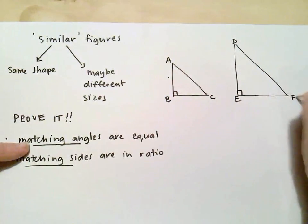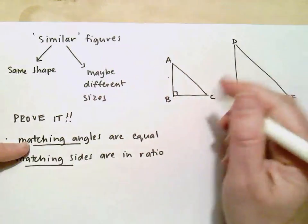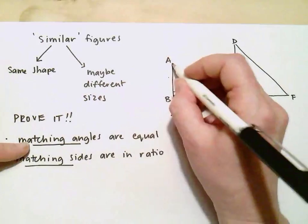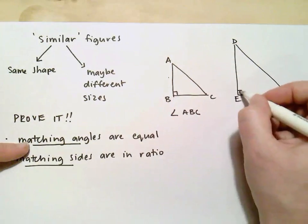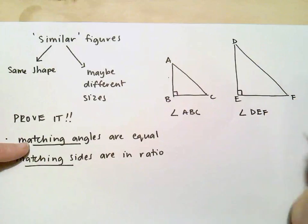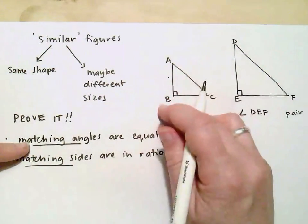then this little angle here I would label as angle ABC. This angle here I'd say is angle DEF. And they form a pair because they're in matching locations.